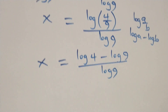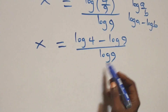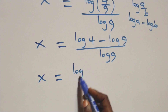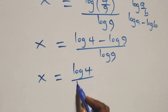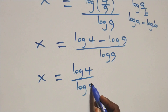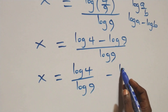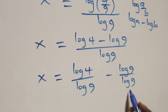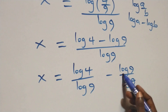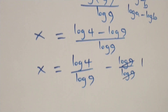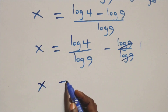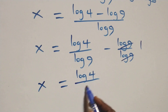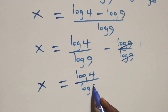What we have here becomes x equals (log 4 minus log 9) over log 9. We separate this into two fractions: x equals log 4 over log 9 minus log 9 over log 9. The log 9s cancel each other, leaving 1, so x equals log 4 over log 9 minus 1.